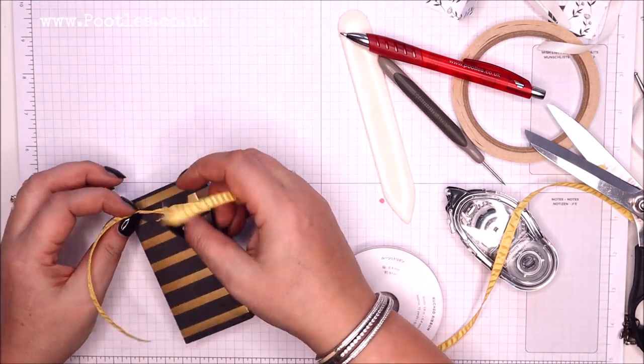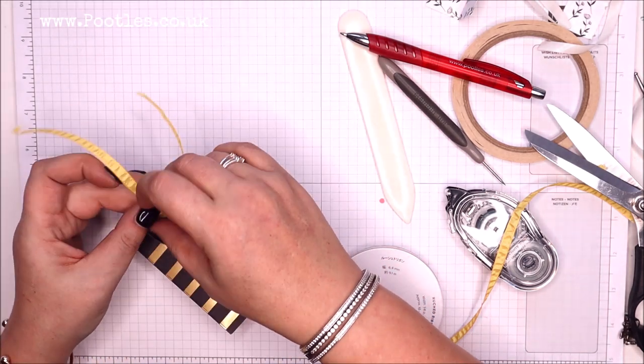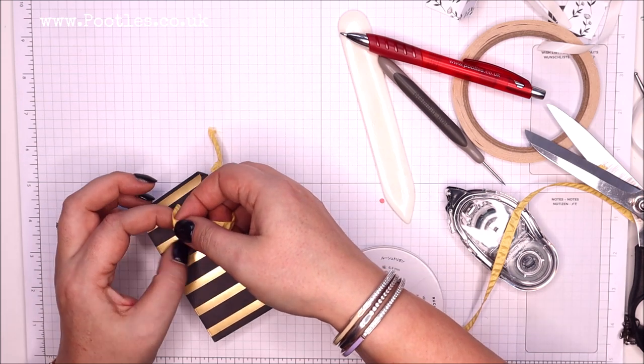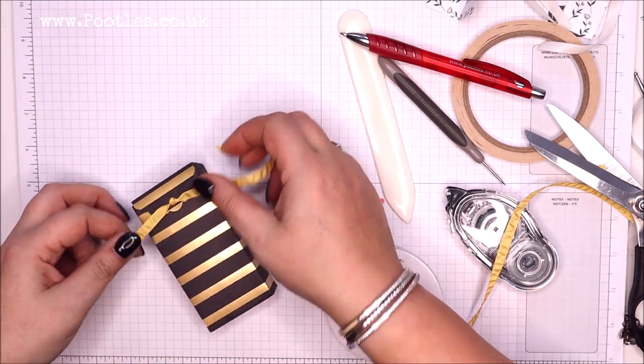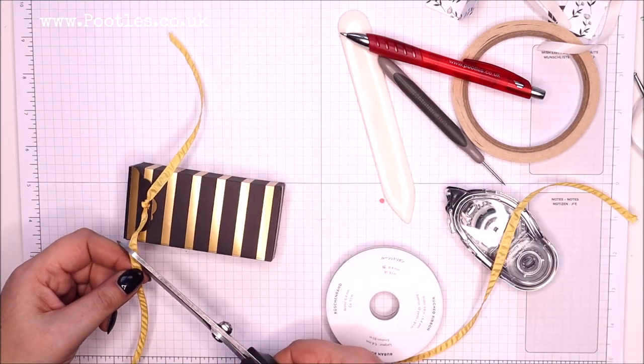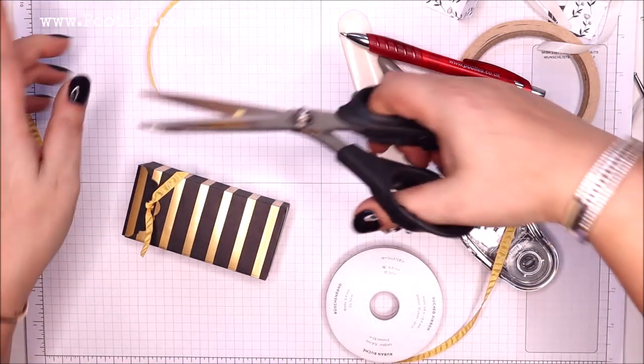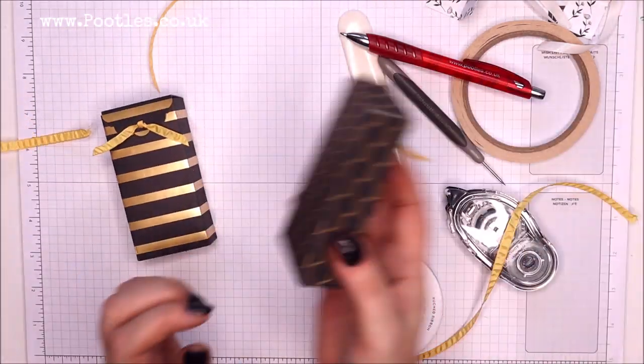You can see what I've done there. All I need to do now is tie off a little square knot, trim off the ends, and that's the box done.